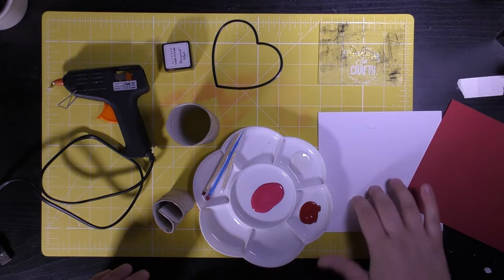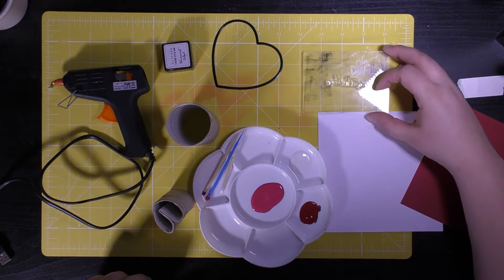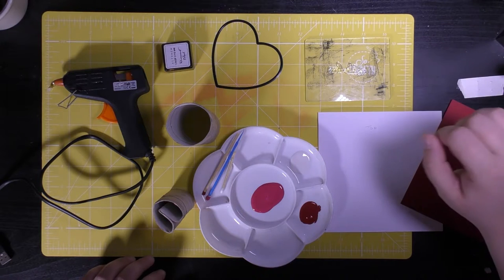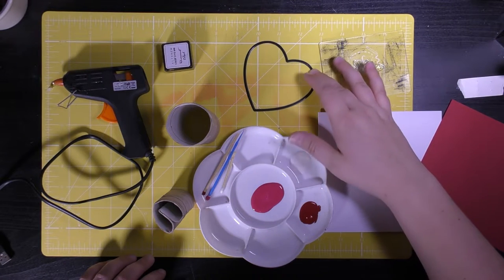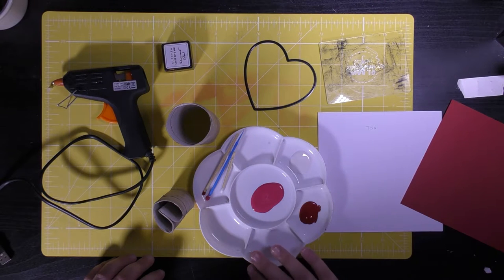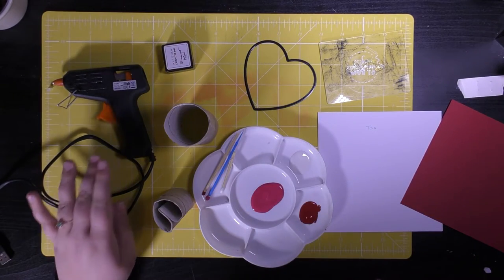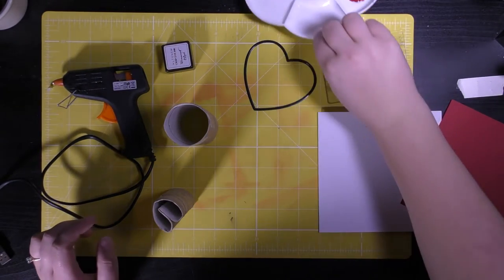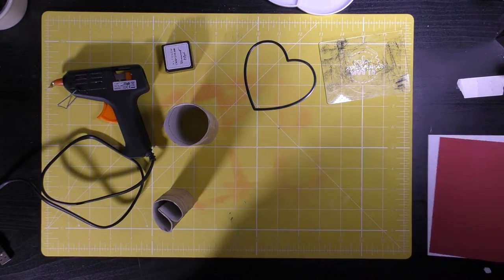A six inch card blank, a sentiment stamp on an acrylic block. I also have a heart shaped die, but if you don't have dies you can use scissors or a craft knife. Some paints and a paint palette, some toilet roll tubes, an ink pad, and a hot glue gun. So to begin, we're going to make a heart shaped stamp.